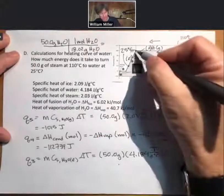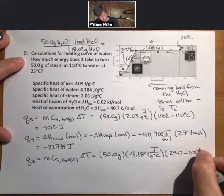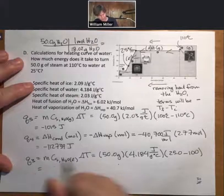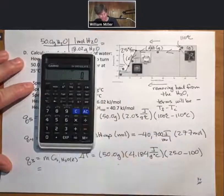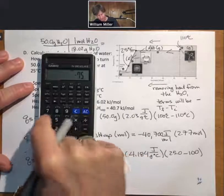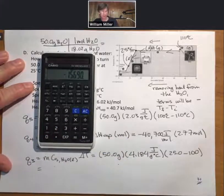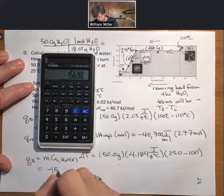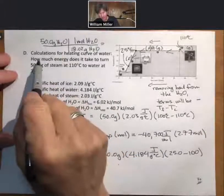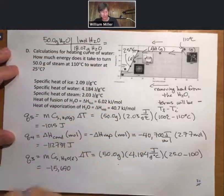4.184 joules per gram degree Celsius, my old friend. And now remember, T initial is 100, T final is 25 degrees. That makes this term negative again. And plugging it in: 25 minus 100 times 4.184 times 50, minus 15,690.